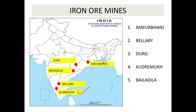First Mayurbhanj — in Odisha. Then Bellary — Karnataka. After that Durg — Chhattisgarh. Then Kudremukh — also Karnataka, a very important mine from where best quality iron ore is extracted and almost all of it is exported. And last is Bailadila — Chhattisgarh.